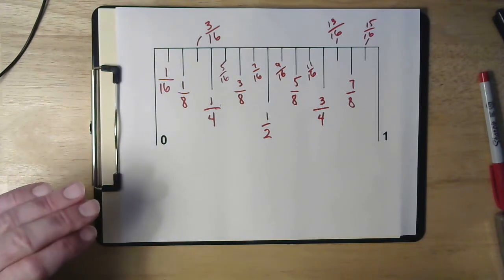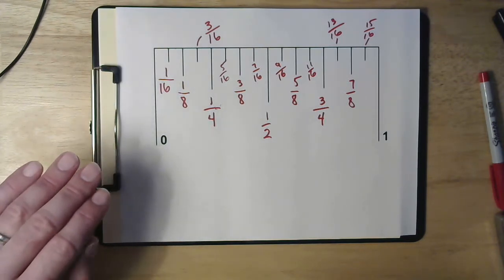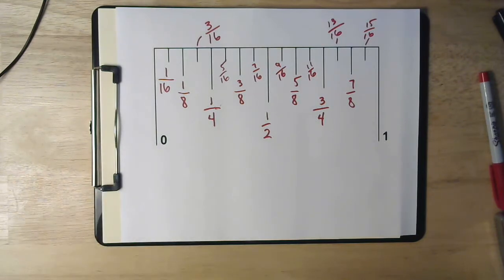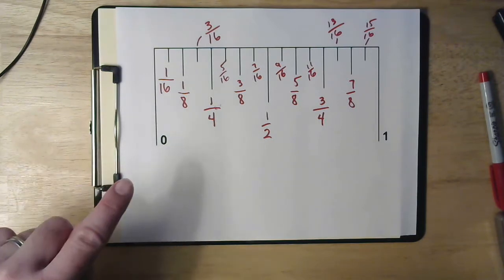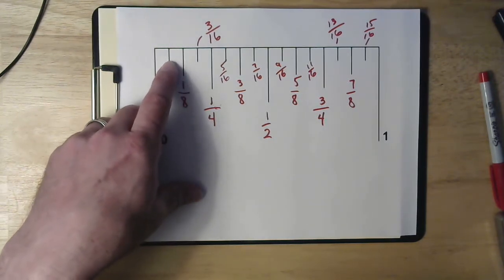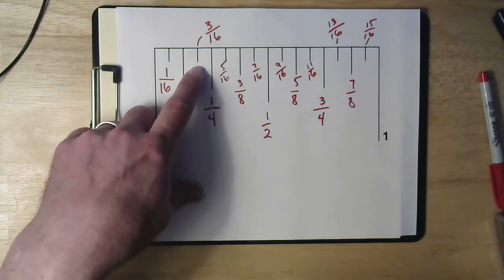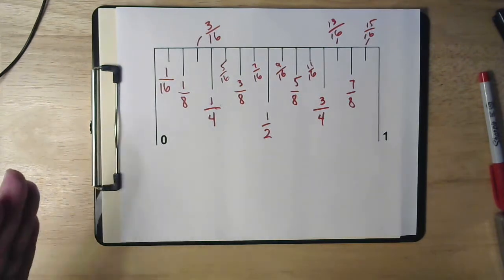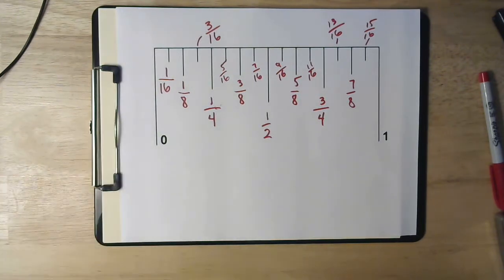So when our tape measure is divided up into sixteenths, that's how the different lines are, what the different lines mean. And so notice again, the sixteenth line is a different length than the eighth line, which is a different length than the quarter, which is a different length than the half. And that allows your eye to visually figure out what the measurements are. So we'll do some practicing with those in another video.